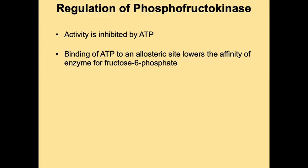The activity of phosphofructokinase is inhibited by ATP, which makes sense: since one purpose of glycolysis is to generate ATP, having an excess of ATP means we don't want to stimulate the pathway further. ATP inhibits phosphofructokinase by binding to an allosteric site, thereby lowering the enzyme's affinity for its substrate fructose 6-phosphate.